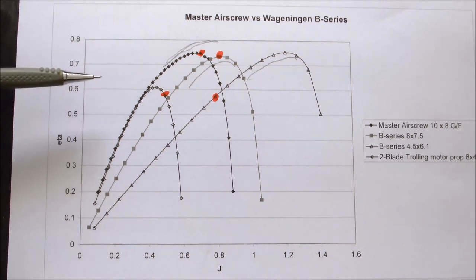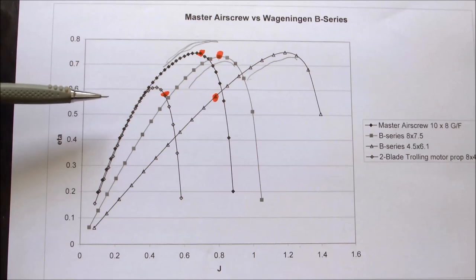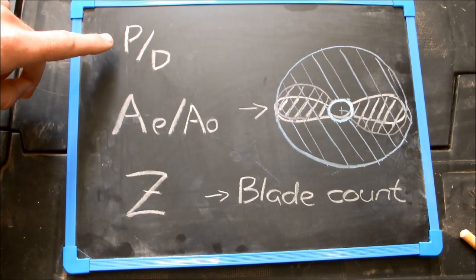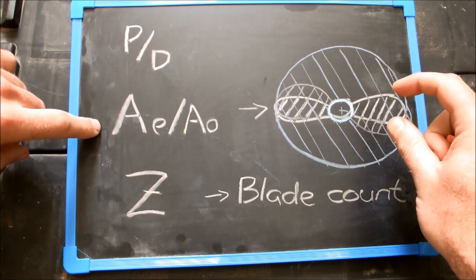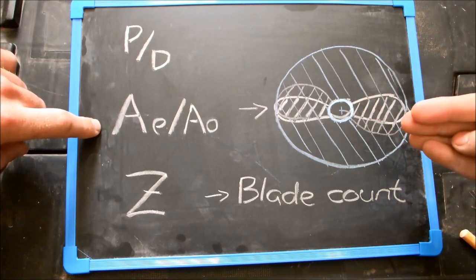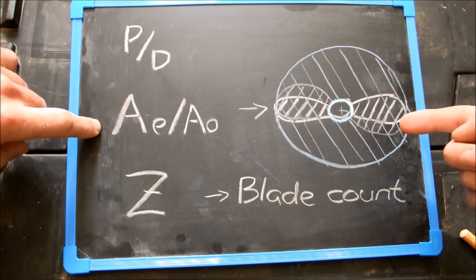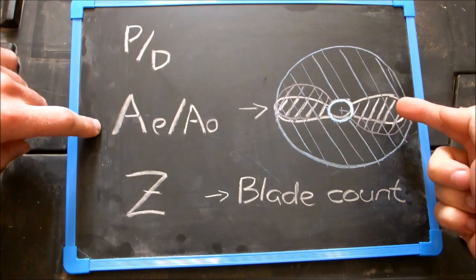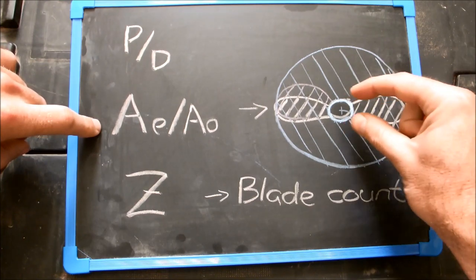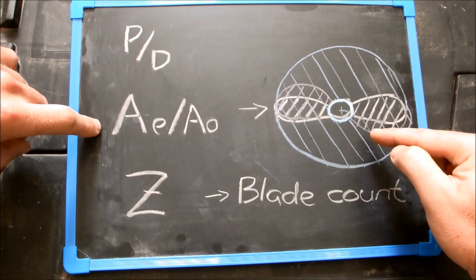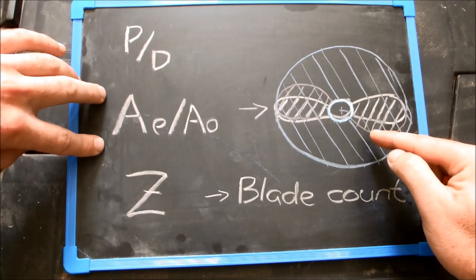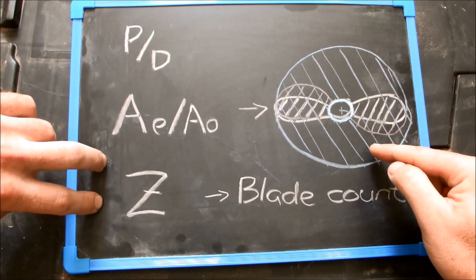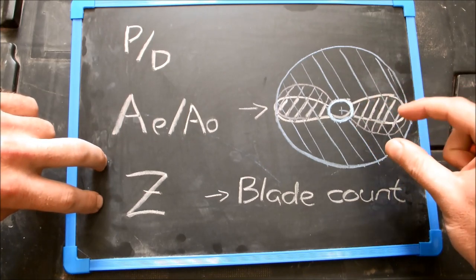Let's have a look at area ratio, pitch to diameter ratio and blade count and see how they impact performance. Pitch to diameter ratio is pretty self explanatory as is blade count. Expanded area ratio is the projected area of the blades once you have removed any twist and camber. And then divide that area by the total swept area of the blades. A low expanded area ratio means slender blades. And then as you add blade area, your expanded area ratio will increase. If you keep expanded blade area constant and add more blades, the width of each individual blade would have to decrease.